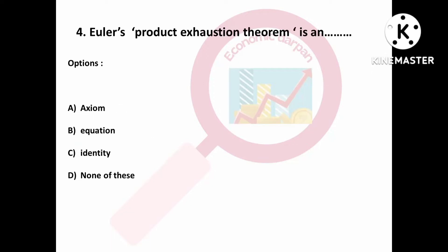Question number four is: Euler's production exhaustion theorem is — Option A: an axiom; Option B: an equation; Option C: an identity; Option D: none of these. Euler's production exhaustion theorem is an identity.